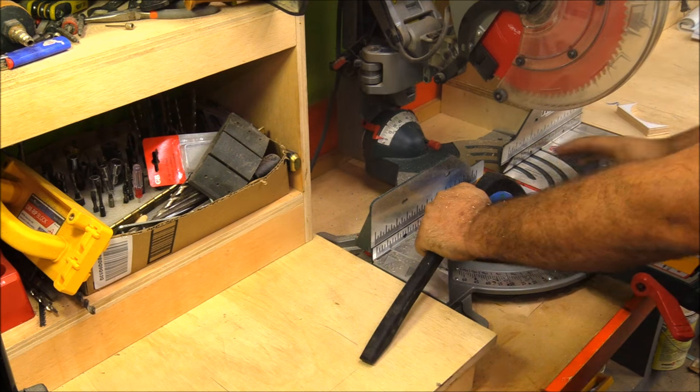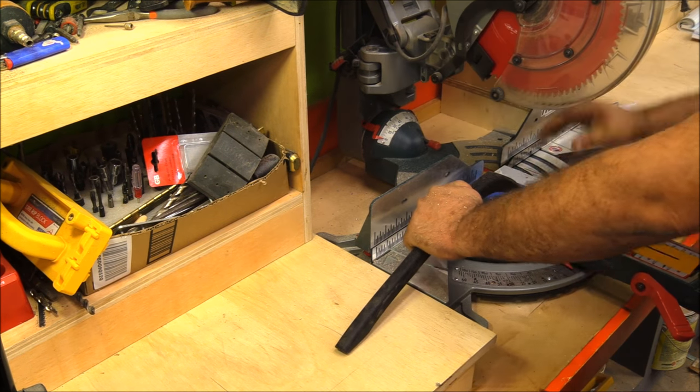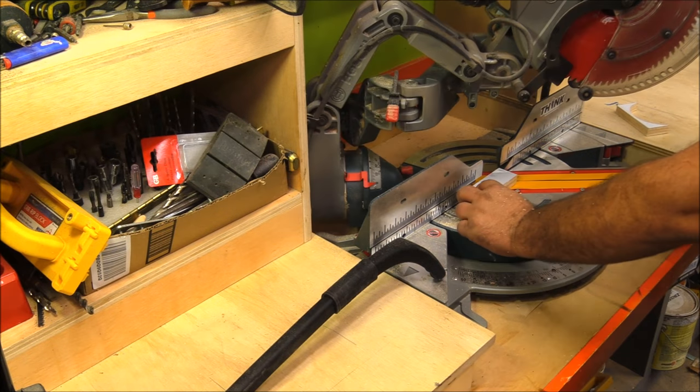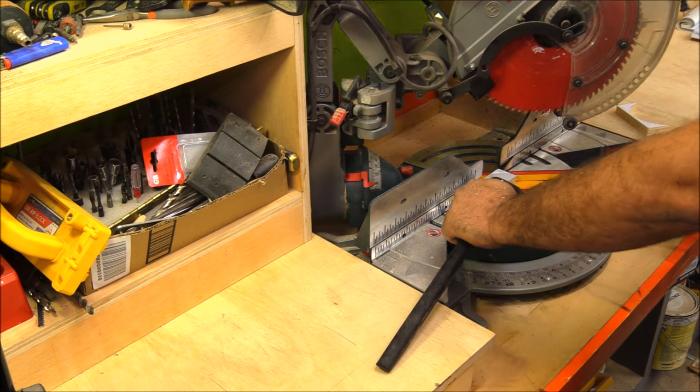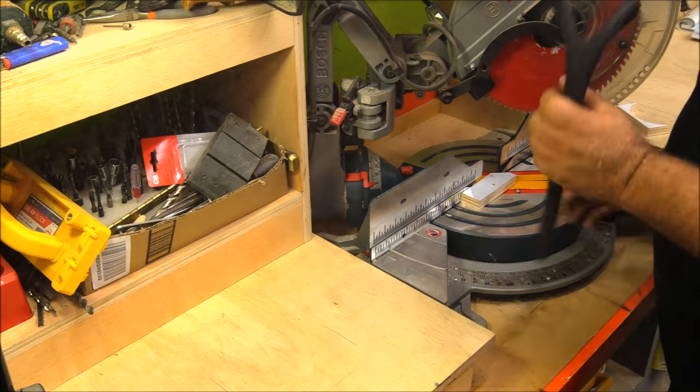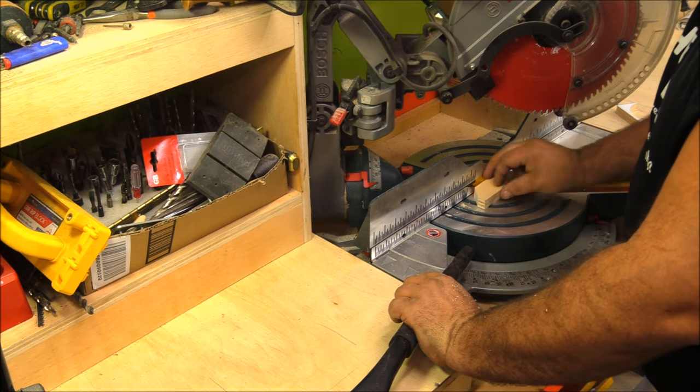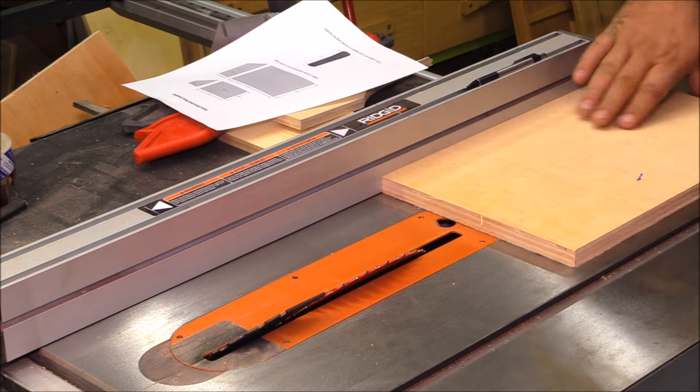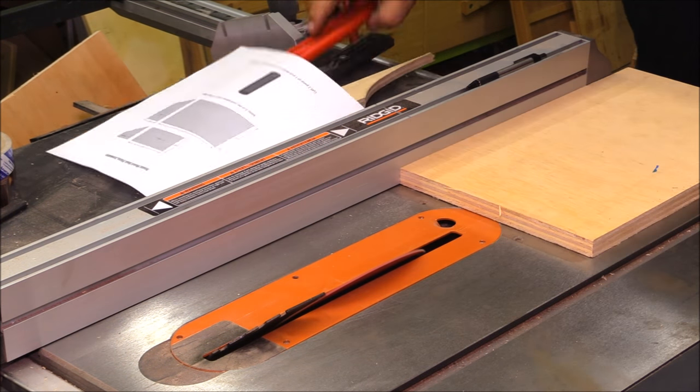I typically make all my straight cuts at the table saw or over on the chop box, but with small parts like that it's really dangerous to get your hand that close. You see me using the 10 Million Dollar Stick from FastCap. That thing is awesome.